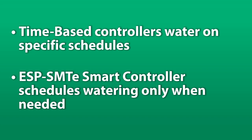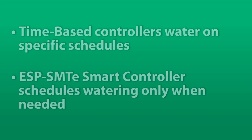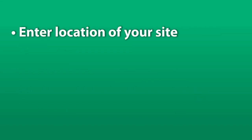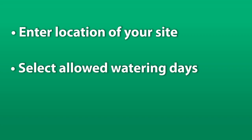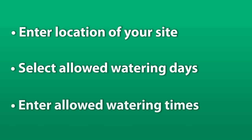In the following example, we'll show you how to set up a basic irrigation schedule. To configure the controller, you'll need to enter the location of your site, select the allowed watering days, and enter allowed watering times.